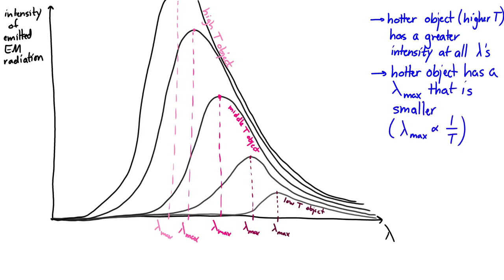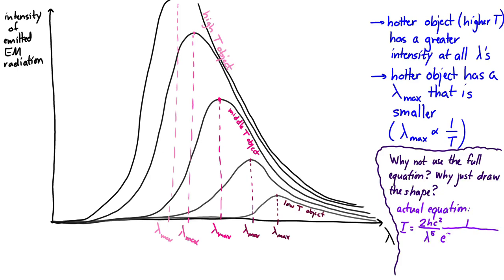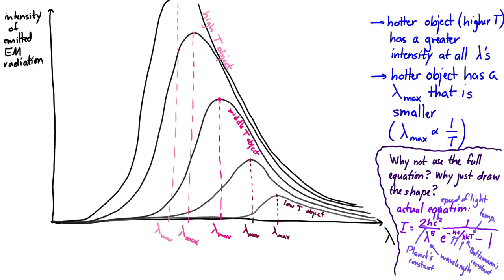If you're wondering why I haven't given the full equation for this function, it's because it's a little intense. The actual equation describing the intensity is: I equals 2hc squared over lambda to the fifth, times 1 over (e to the hc over lambda kT minus 1). Here h is Planck's constant, c is the speed of light, lambda is the wavelength, k is the Boltzmann constant, and T is the temperature of the object. I've skipped over quite a few details, and I'll leave it to a future physics class to take apart these things.